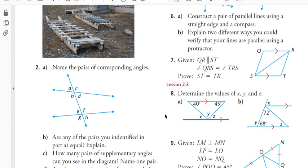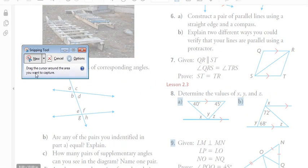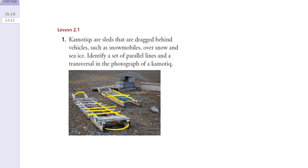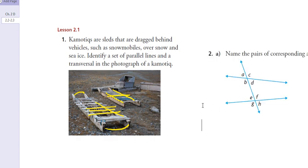Question number two: name pairs of corresponding angles. If you look at this diagram, you can still name corresponding angles. Those angles won't be equal if the lines aren't parallel, but you can still call them corresponding. So pairs of corresponding angles: A and E are corresponding — same orientation, attached to a different line but the same transversal. C and F, D and H, and G and B — those would be corresponding angles.